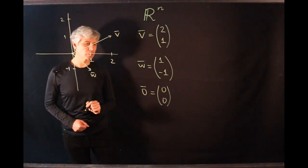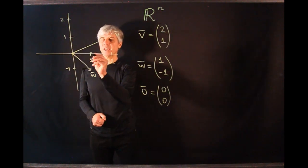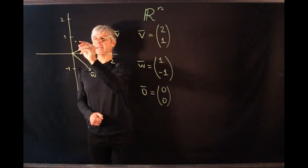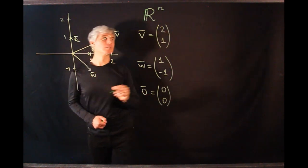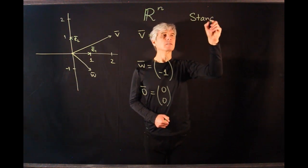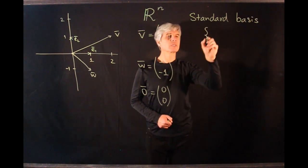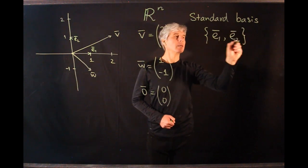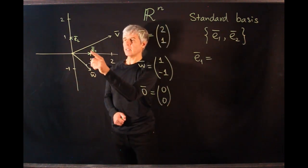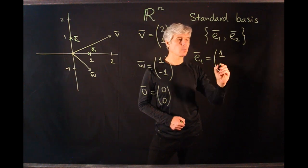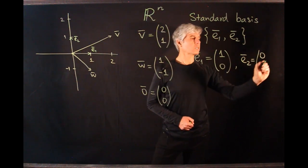The zero vector connects the origin to itself. A special role is played by unit vectors on the x-axis and y-axis. We're going to call them E1 and E2. These are called standard bases, consisting of two vectors E1 and E2. The vector E1 has x coordinate 1 and y coordinate 0, so this vector is (1, 0). The vector E2 has coordinates (0, 1).